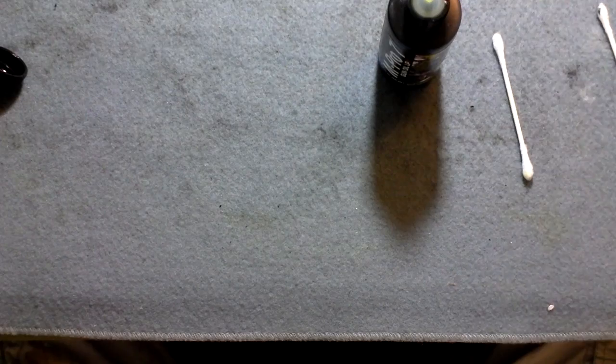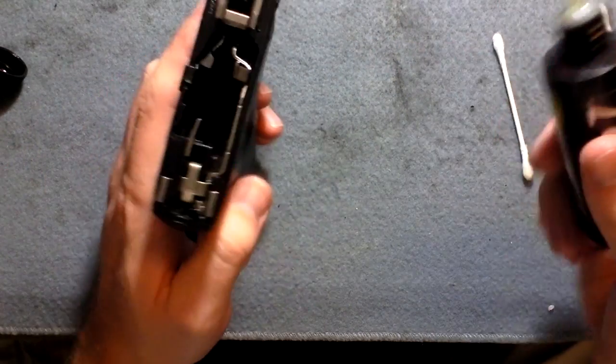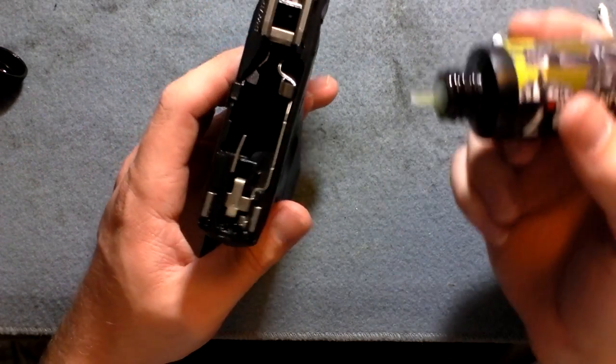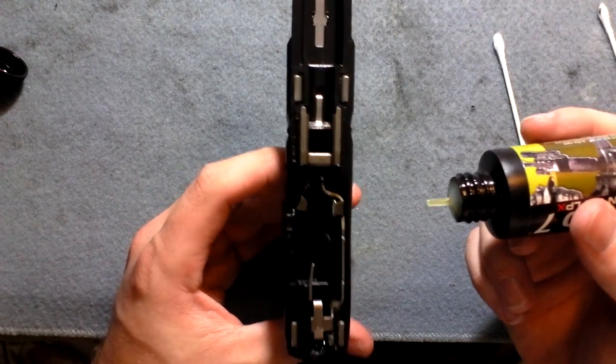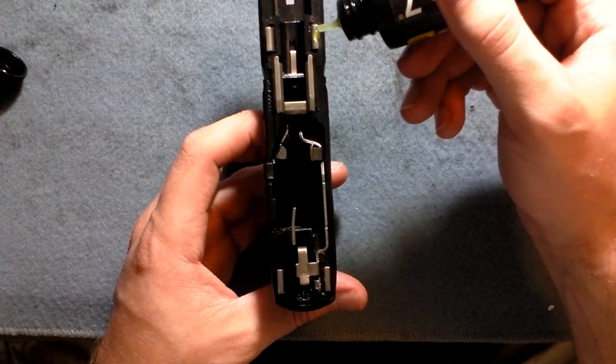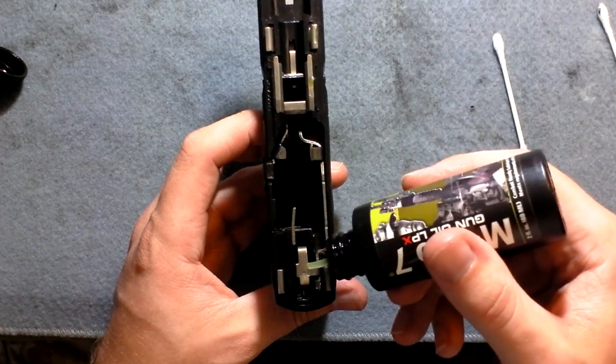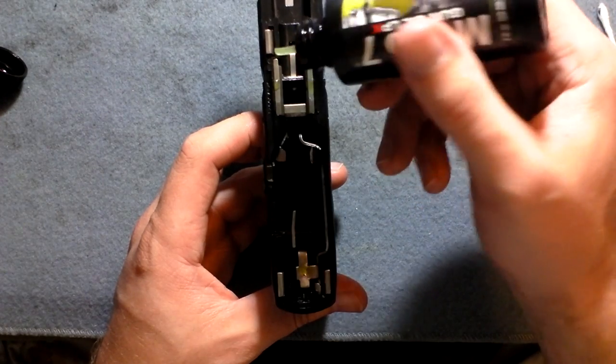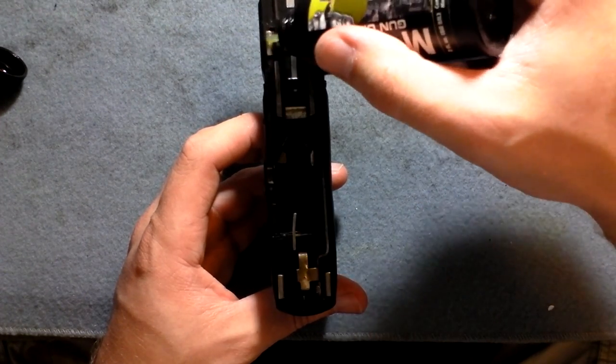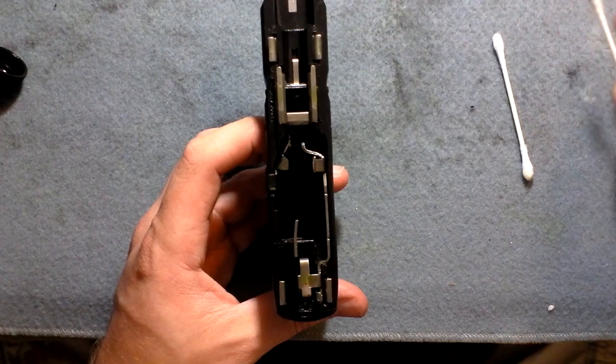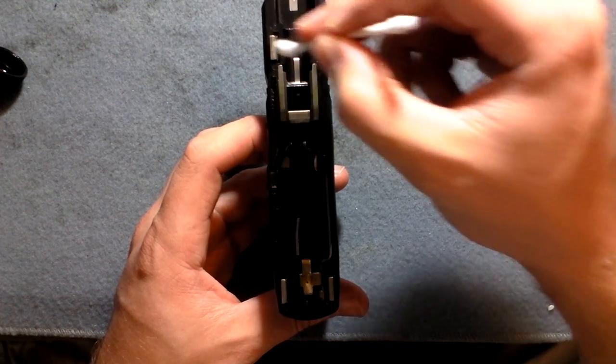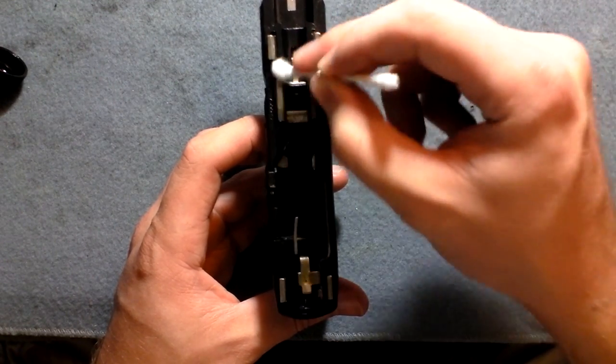Now let's turn our attention to the bottom portion of the gun. Now for this, what I'll do is all the metal parts you see here, I'll go ahead and put a drop. Then I'll take a Q-tip and work it in with the Q-tip.